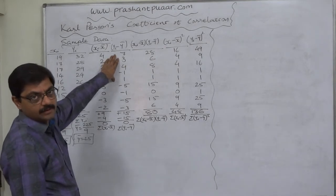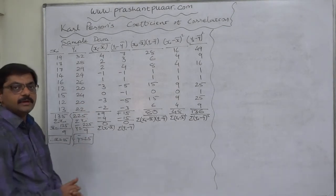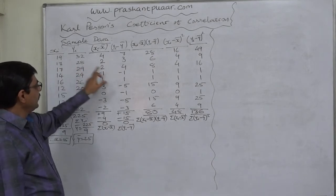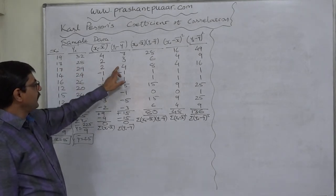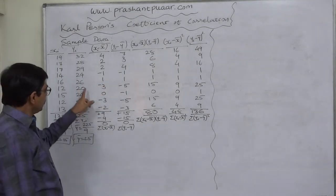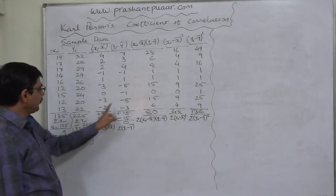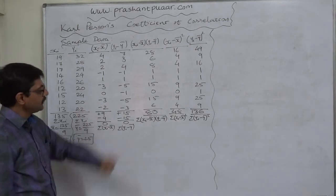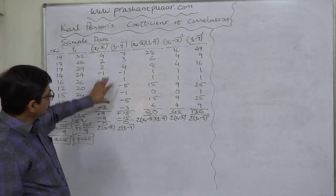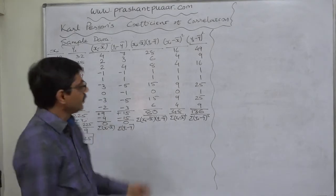Now we find Y minus Y-bar the same way, subtracting Y-bar 25 from each value of Y: 32−25=7, 28−25=3, 29−25=4, 24−25=−1, 26−25=1, 20−25=−5, 22−25=−3. The summation of positive deviations is +15 and negative deviations is −15, giving absolute zero, so this column is also correct.